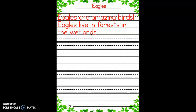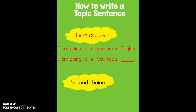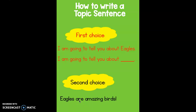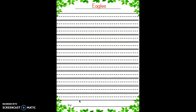Think about which choice you want to use for your topic sentence. Do you want to write choice one, where it says 'I am going to tell you about' and then write your Florida friend? Or do you want to come up with your own exciting sentence that states something cool about your animal as your topic sentence? Pause the video now, write your topic sentence on your rough draft, and when you're done hit play.